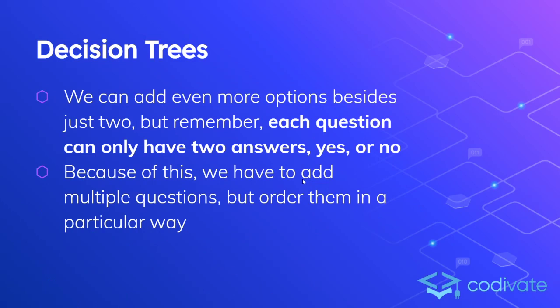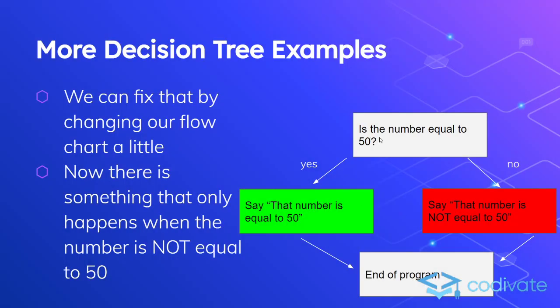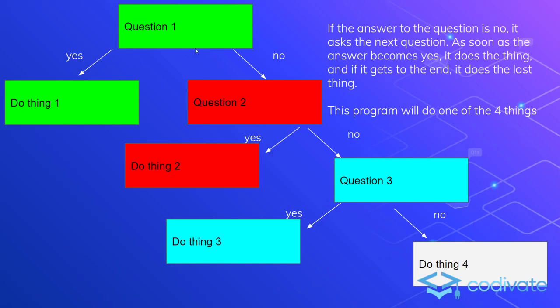We can actually do more than just two options — we can do three or four. The way we do that is to stack, to ask questions inside of other questions. We can't just have three arrows branching from one box, but we can have Question 1, Question 2, Question 3. If Question 1 is 'is the number equal to 50,' then do Thing 1. Question 2: 'we know it's not equal to 50, so is it greater than 50?' — if so, say greater than 50. Question 3: 'is it less than 50?' — and if so, say less than 50. We can stack as many or as few as we want.